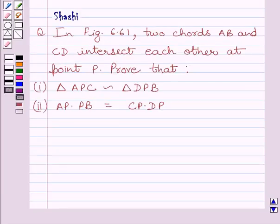Hi and welcome to the session. Let us discuss the following question. In figure 6.61, two chords AB and CD intersect each other at point P.